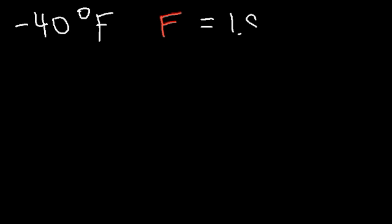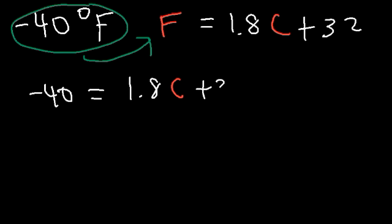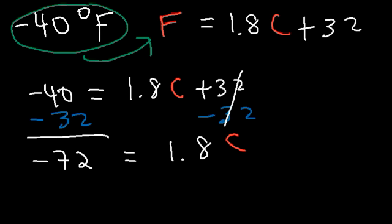We know that F = 1.8C + 32, so replace F with negative 40: negative 40 = 1.8C + 32. Subtract 32 from both sides — the opposite of addition is subtraction — giving negative 40 minus 32, which is negative 72. Then divide both sides by 1.8, since 1.8 is multiplied to C. Negative 72 divided by 1.8 is negative 40.